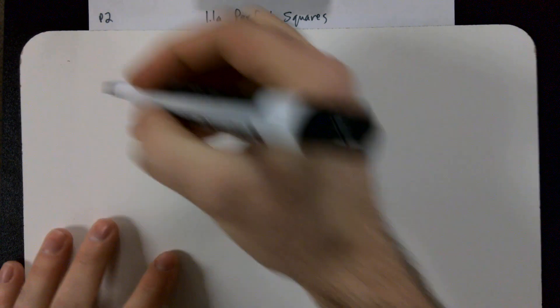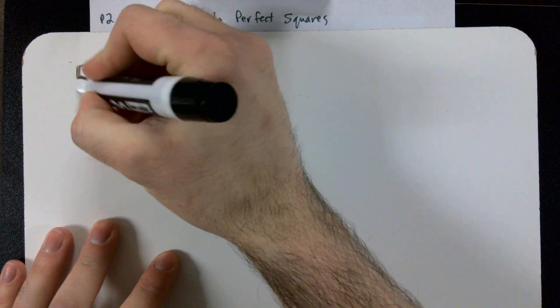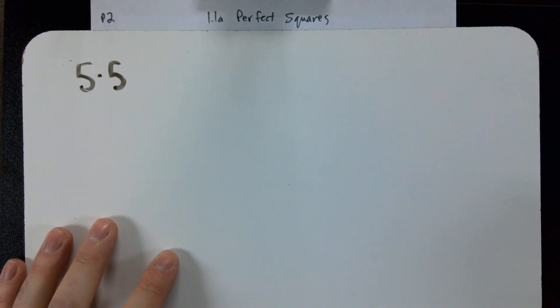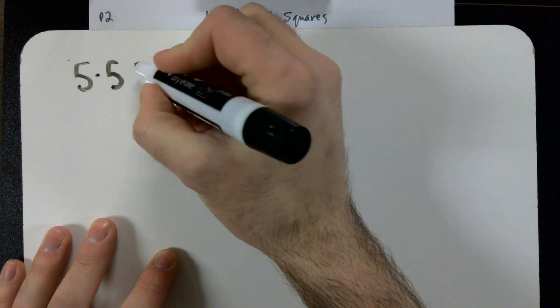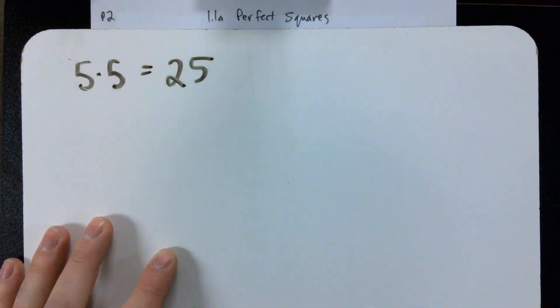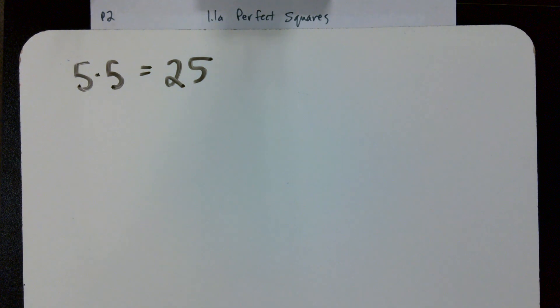We are already familiar with how to evaluate exponents. We just did it in the warm-up, technically. We didn't see the exponents, but what we saw was something like 5 times 5, and we knew that was going to give us 25.